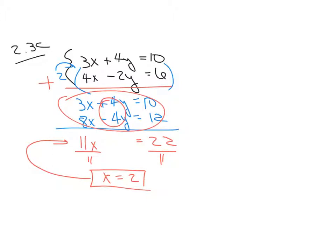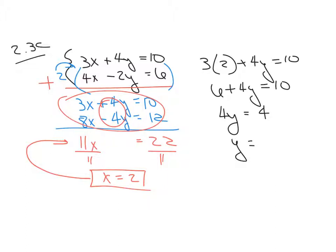All I have to do now is take this x equals 2 and put it here or here and solve for y. So let's say I pick the top one. It doesn't matter which one you pick. Okay, 6 plus 4y equals 10. I have one equation, one variable, which is good.